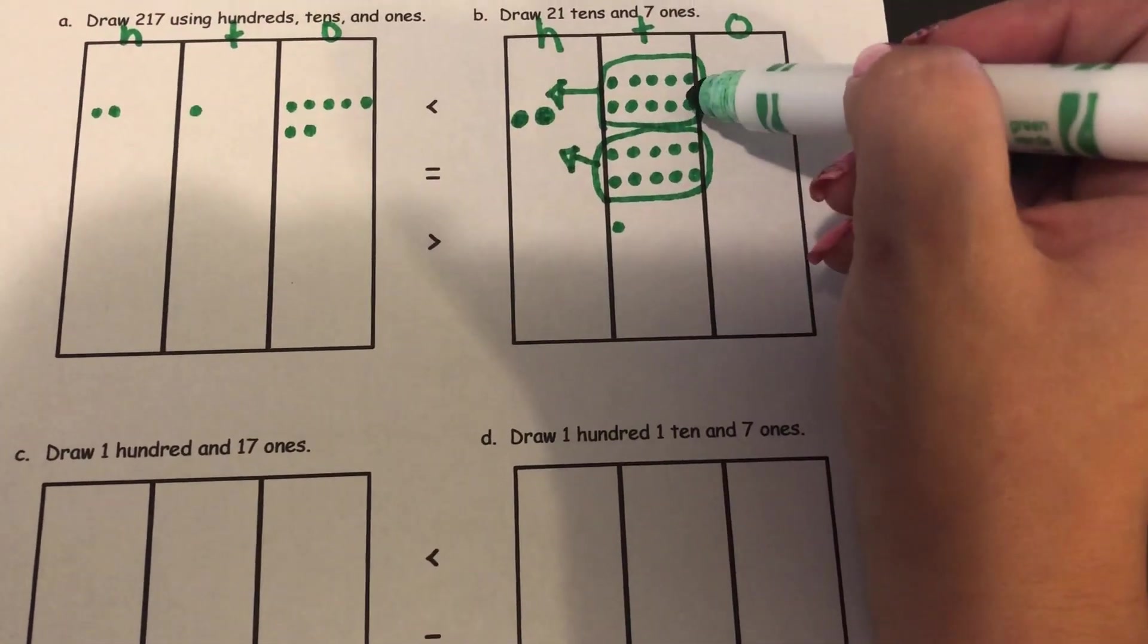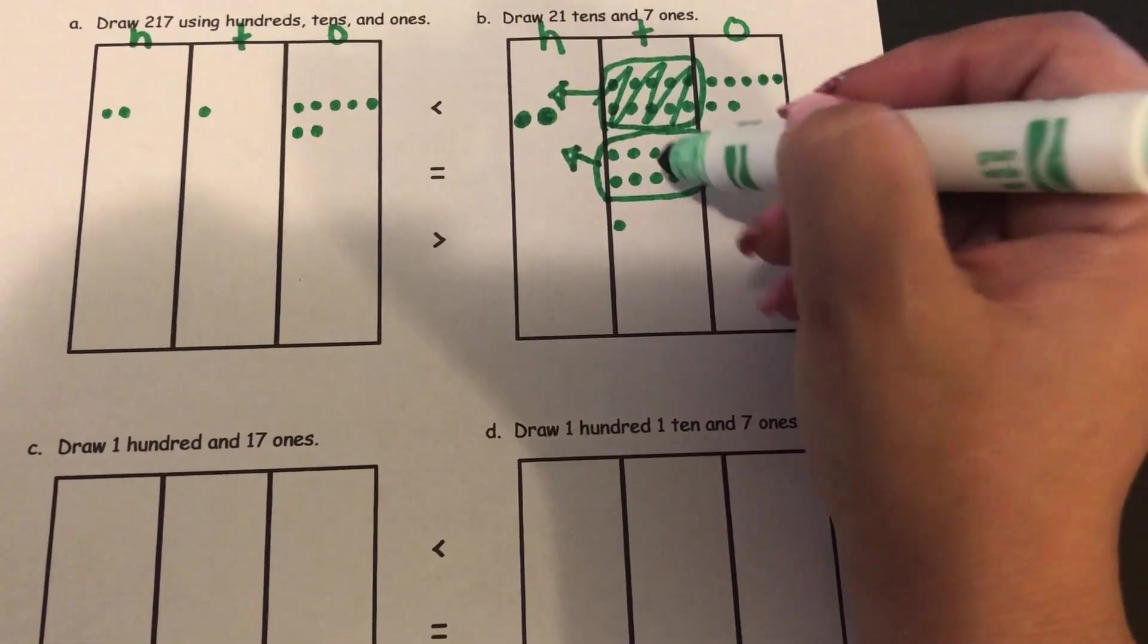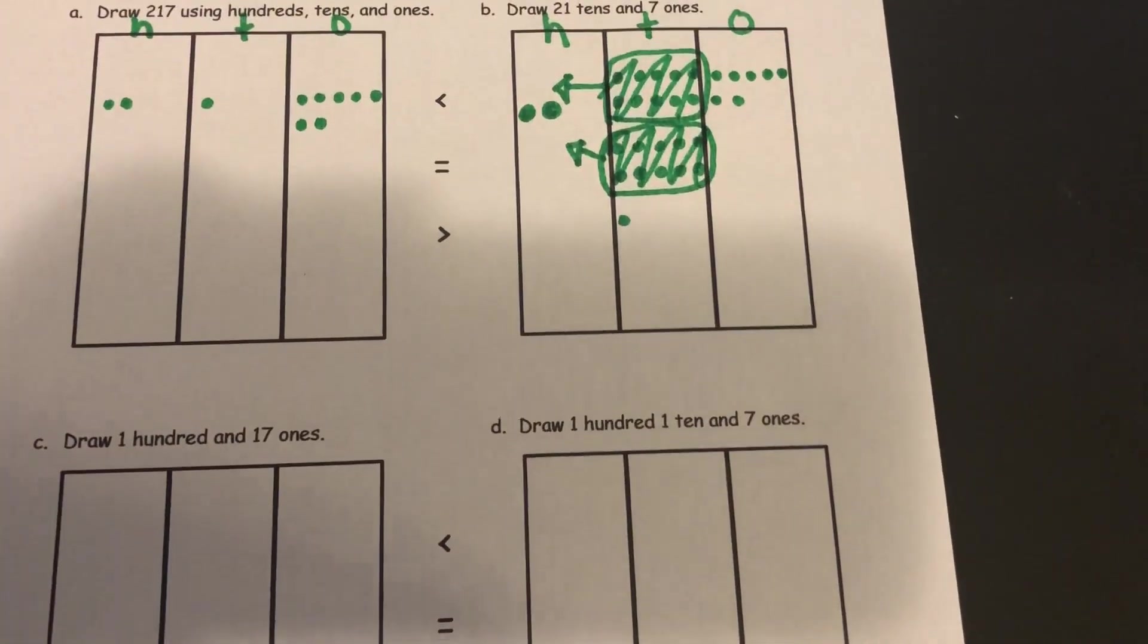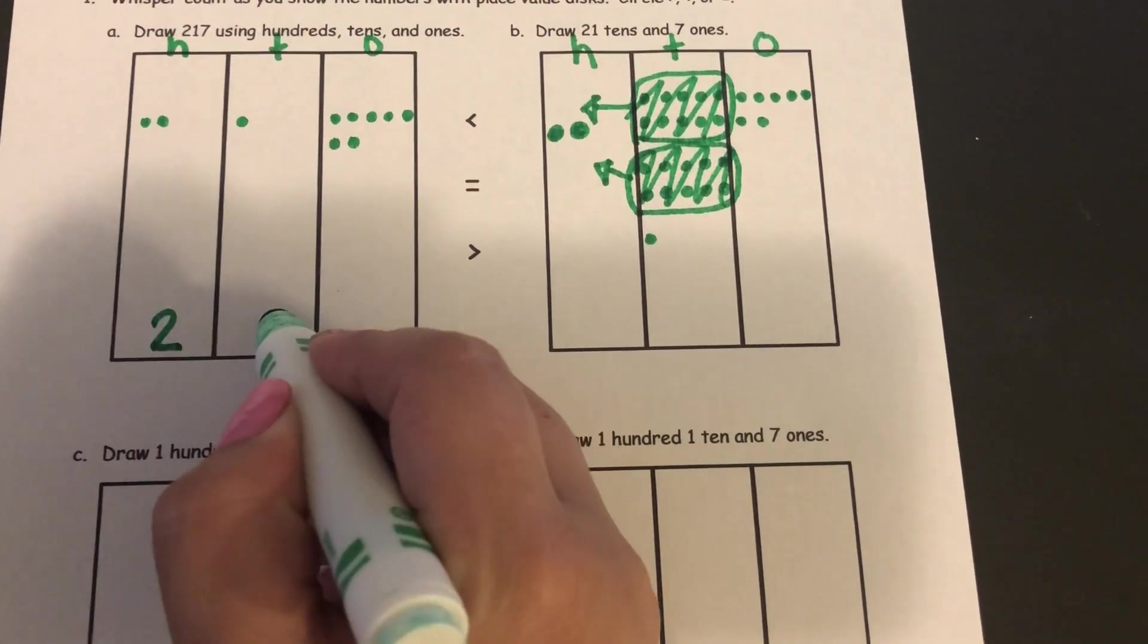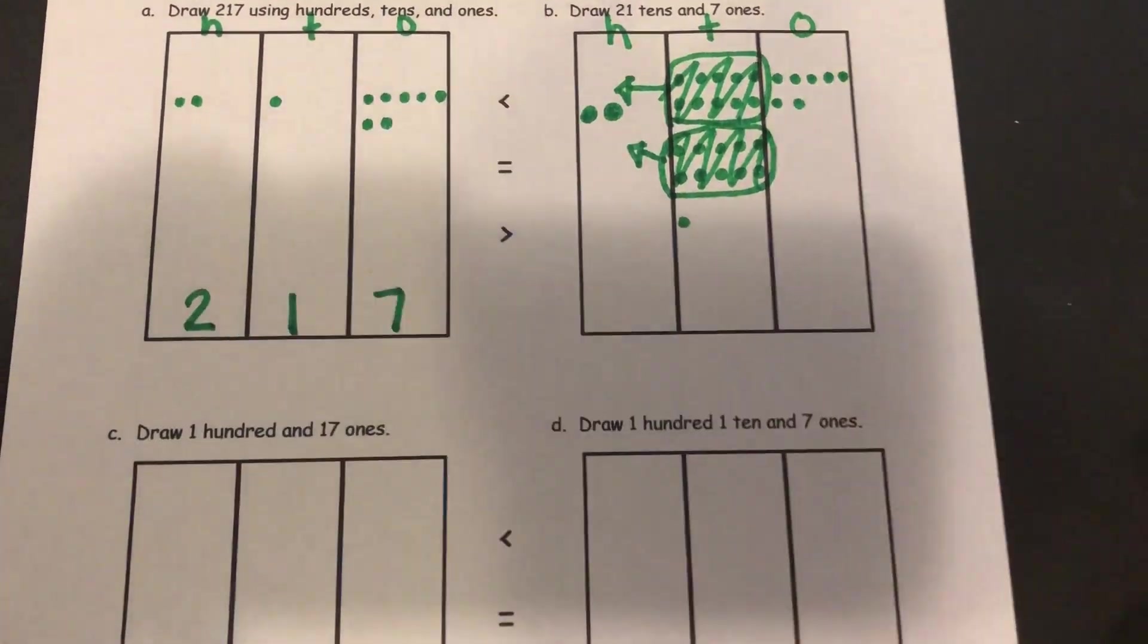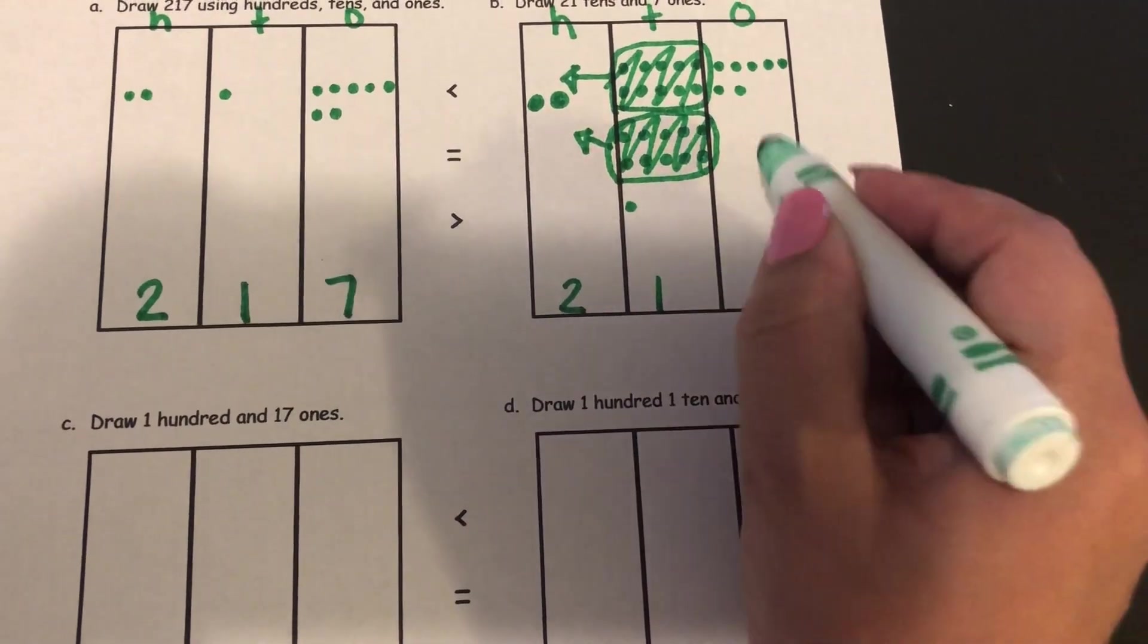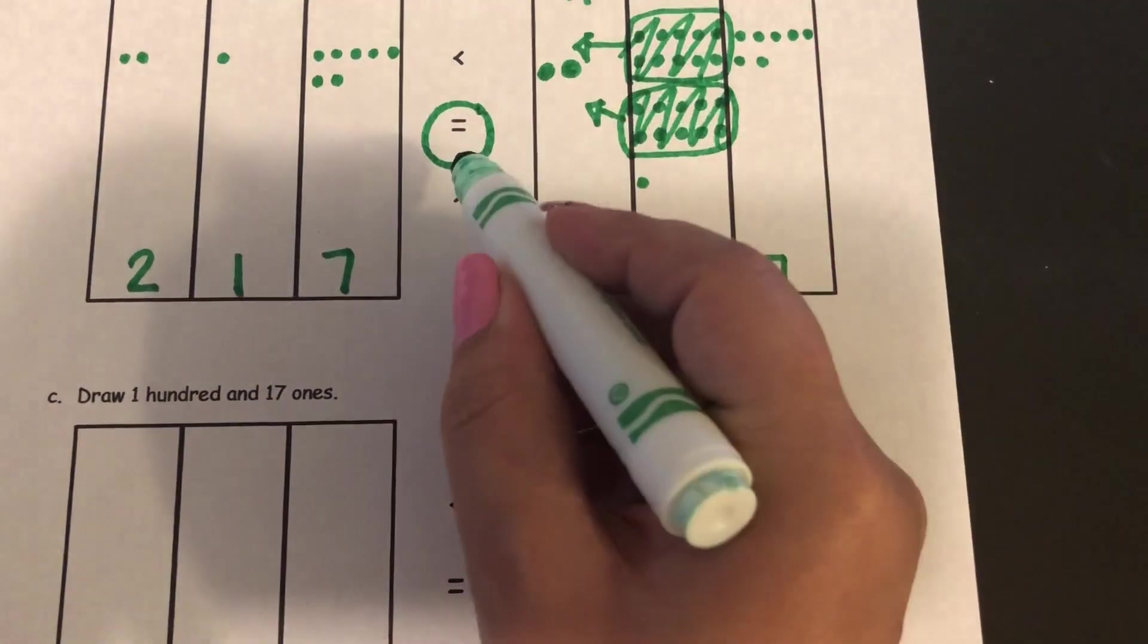All right, so instead of having ten tens I'm showing it as a hundred so I can cross that out. And instead of showing this ten tens I represented it as another hundred so I can cross that set. Now I can see what my numbers are. All right, well this number has two hundreds, one ten, and seven ones. So this number is 217, and this number is two hundreds, one ten, and seven ones. This is also 217. So I would say that these are equal.